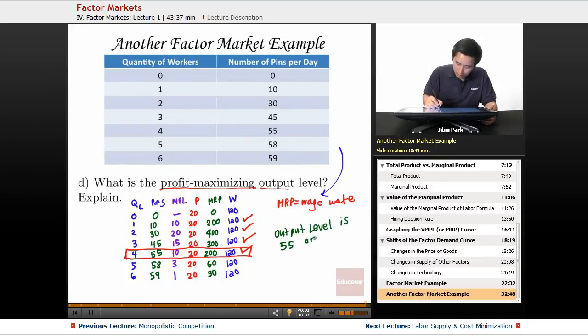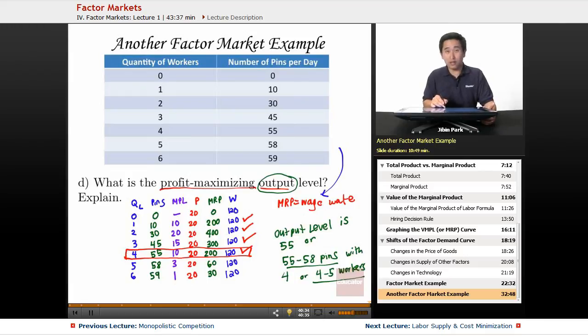It'd be helpful to box this entire row. The output level is 55 pins, or another acceptable answer would be 55 to 58 pins with four or four to five workers. If you only say four to five workers, you're not answering what the output level is—that's the number of pins. If you box this area, chances are you'll get credit on the AP exam because you have that as a double safeguard.